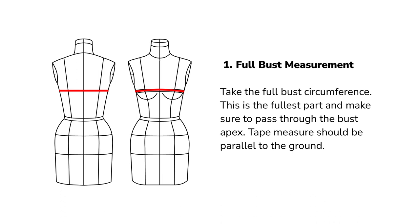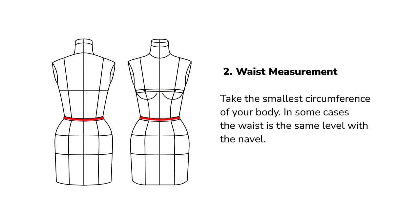Full bust measurement: take the full bust circumference ensuring you measure around the fullest part of the bust and pass through the bust apex. Keep the tape measure parallel to the ground. Waist measurement: measure the smallest circumference of your body. In some cases, the waist aligns with the level of the navel.